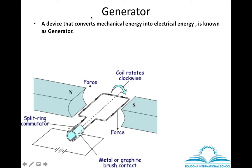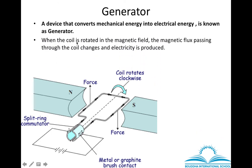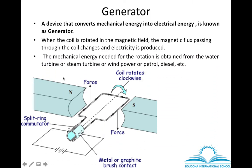Both dynamo and generator convert mechanical energy — kinetic energy from movement — into electrical energy. When the coil is rotated in the magnetic field, the magnetic flux changes, and because of that, electricity is produced due to the movement of electrons. The mechanical energy needed for rotation of the coil can be provided by water, wind, petrol, or diesel. This is how the generator functions.